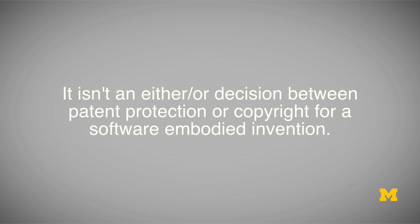The first thing to note is that it isn't really an either-or decision between patent protection or copyright for a software embodied invention. Copyright automatically protects expression once it's been written or reduced to some form of tangible medium. So when you write the source code that implements a software embodied function or product, there's automatically copyright protection for that source code. The decision is really then whether it's worth pursuing patent protection to supplement the other forms of intellectual property that go along with source code and software.